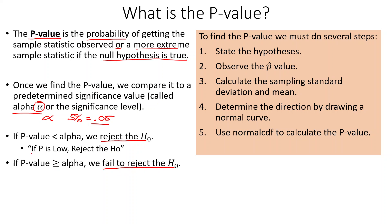The way we usually remember this is the phrase: if p is low, reject the hoe. So if p is low, reject the hoe.